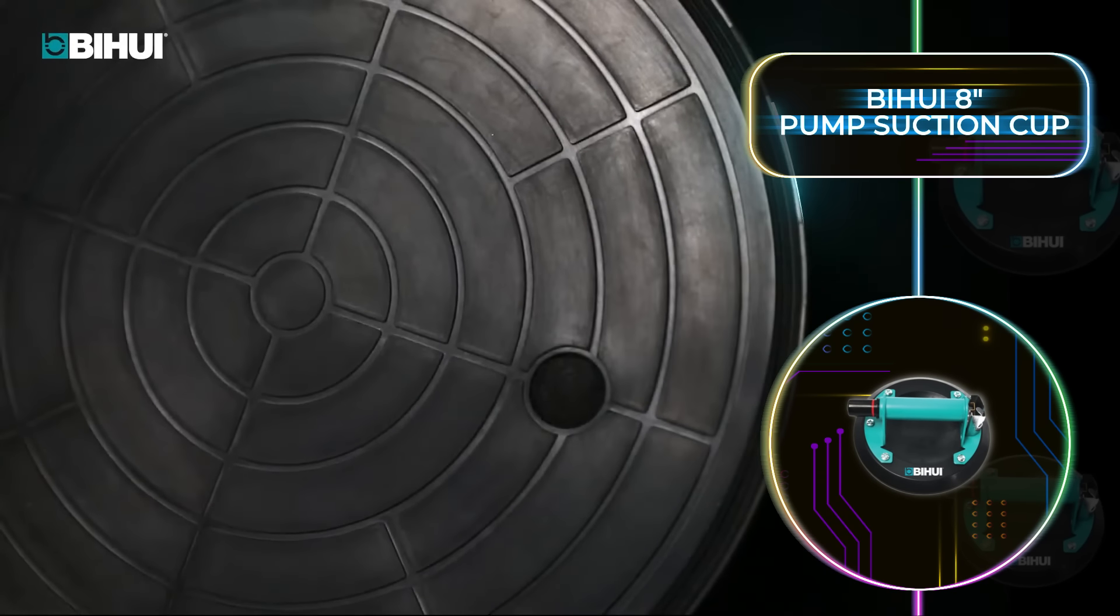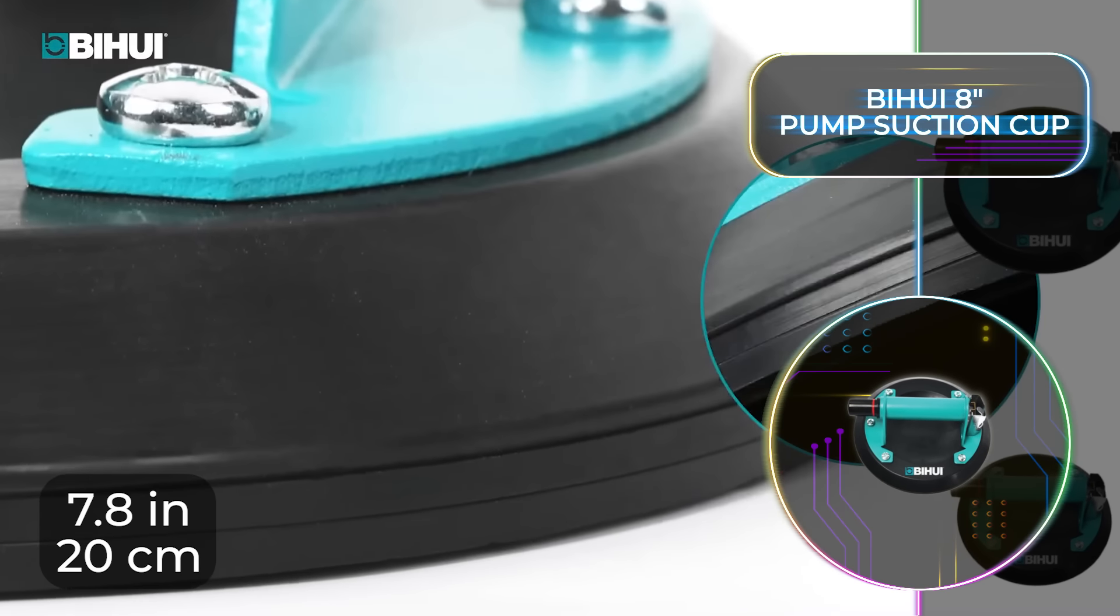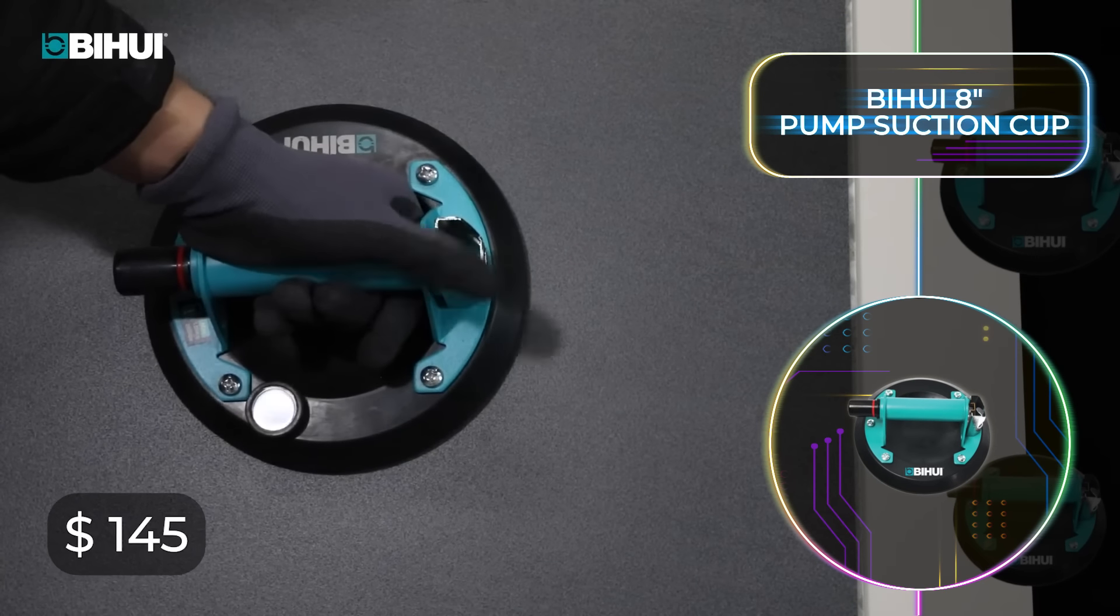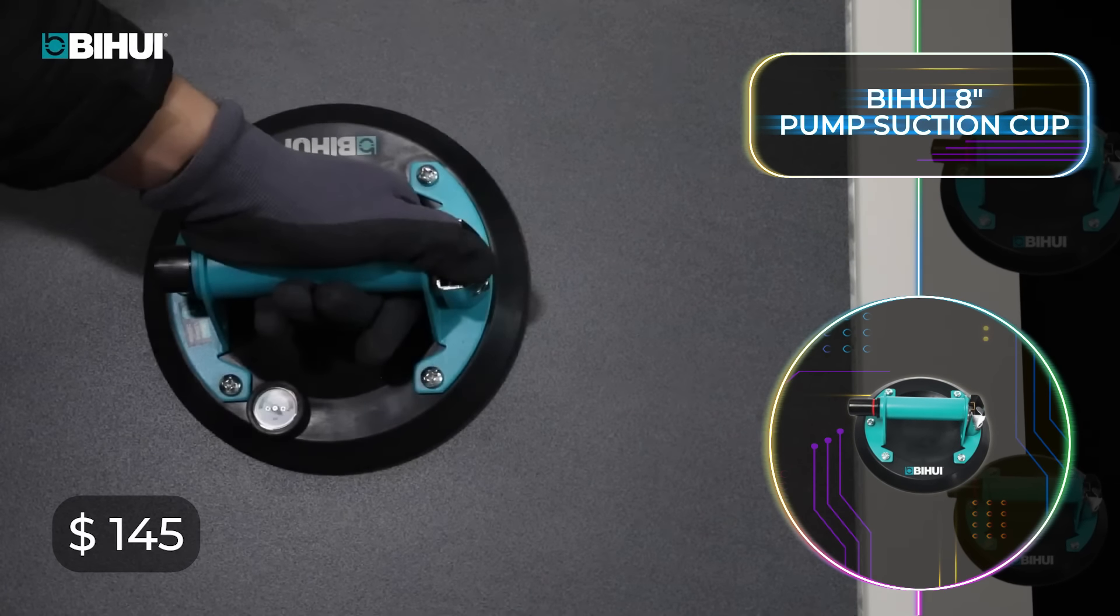The more powerful version boasts a durable steel handle while the less powerful version features a sturdy plastic handle. The suction cups have a diameter of approximately 7.8 inches or 20 centimeters. Investing $145 in the advanced version may be worth it.